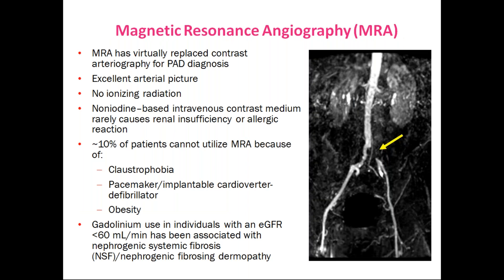Magnetic resonance angiography provides an excellent arterial picture with no ionizing radiation and uses non-iodine-based intravenous contrast medium that rarely causes renal insufficiency or allergic reactions. However, 10% of patients cannot use MRI due to claustrophobia, and those with pacemakers are contraindicated. It is also not commonly used in cases of obesity.